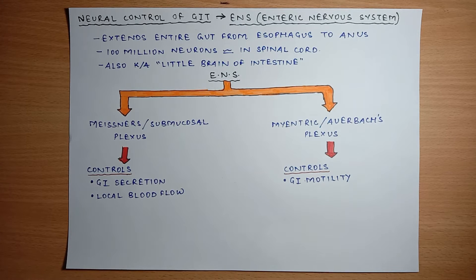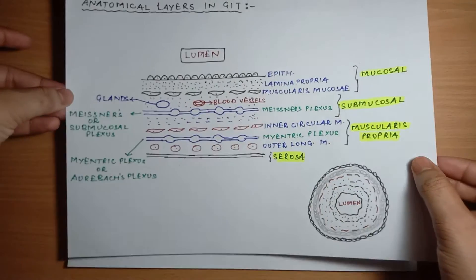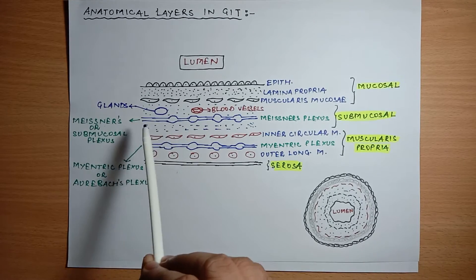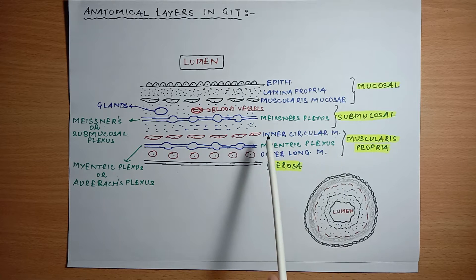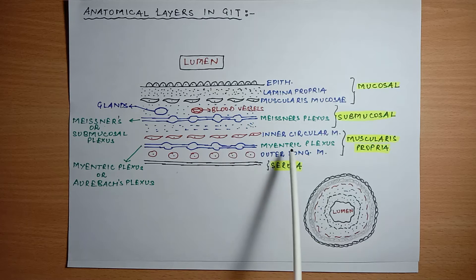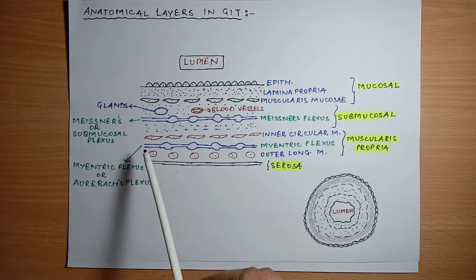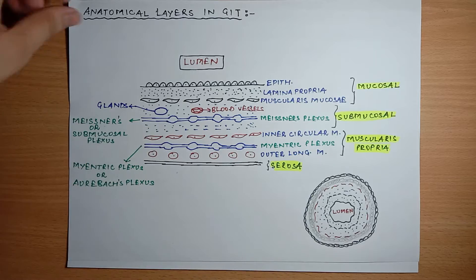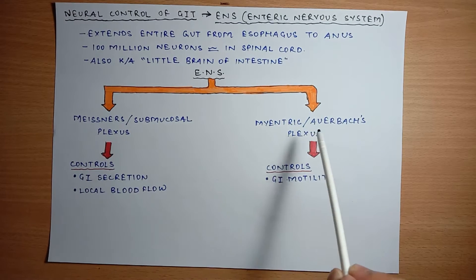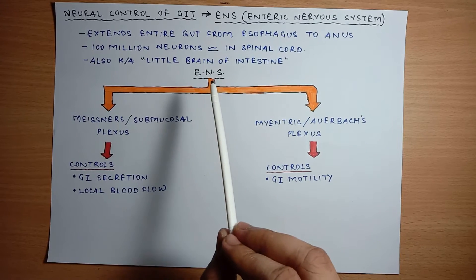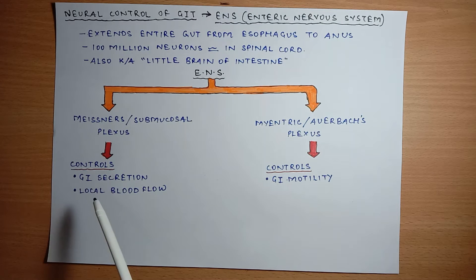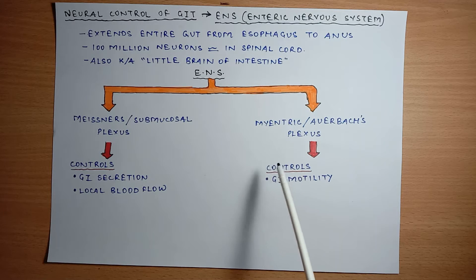We have discussed in a past video the anatomical layers of GIT. There are two plexuses: the submucosal plexus, also called Meissner's plexus, and the myenteric plexus present between the inner circular muscle and outer longitudinal muscle of muscularis propria, also called Auerbach's plexus. Both Meissner's plexus and the myenteric plexus together form the enteric nervous system. Meissner's or submucosal plexus controls GI secretions and local blood flow, while the myenteric or Auerbach's plexus controls GI motility.